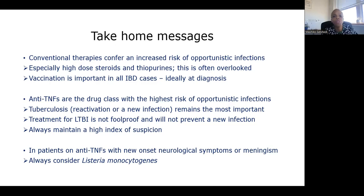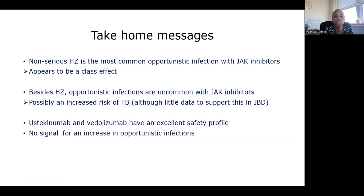Regarding tuberculosis and tofacitinib: 58 cases of active TB were identified in the global tofacitinib rheumatoid arthritis program, almost all from high prevalence areas. Reassuringly, data from the global tofacitinib UC clinical program up to eight years identified no cases of M. tuberculosis. There was an increased risk of herpes zoster as expected, but no increased risk of other opportunistic infections. Real-world meta-analysis data also does not support an increased risk of TB with tofacitinib.